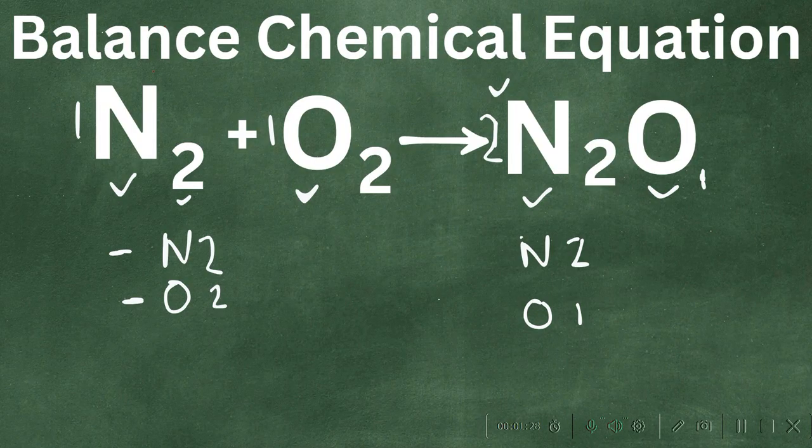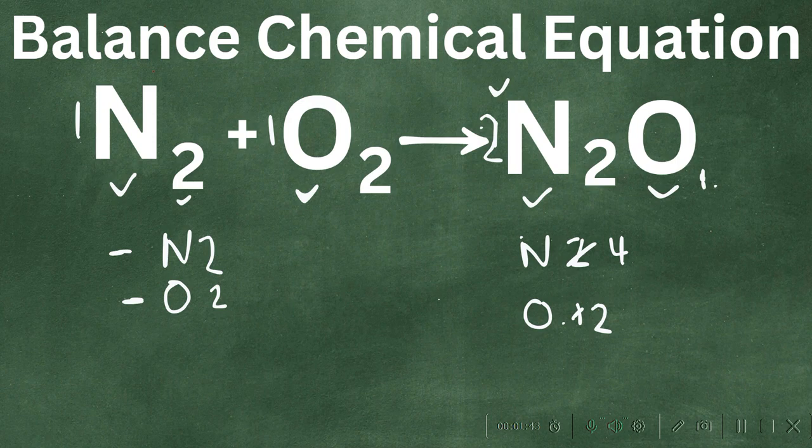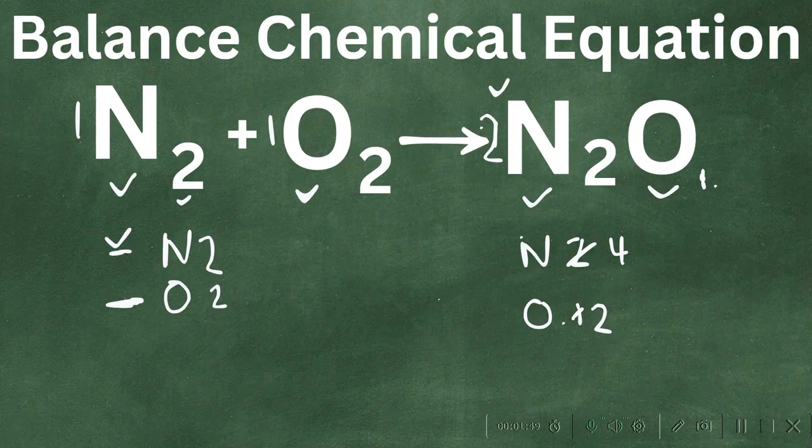So now I have 2 times 2 with the nitrogen, so this becomes a 4, and then 2 times 1, and this gives us 2 oxygens. So now we have the oxygens balanced, but now the nitrogens are a little out of balance.